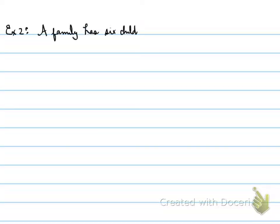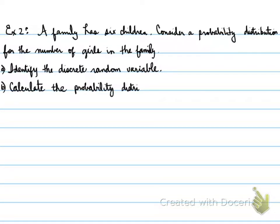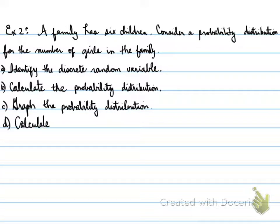Example two. A family has six children. Consider a probability distribution for the number of girls in the family. Identify the discrete random variable, calculate the probability distribution, graph the probability distribution, and calculate the expectation and interpret its meaning.